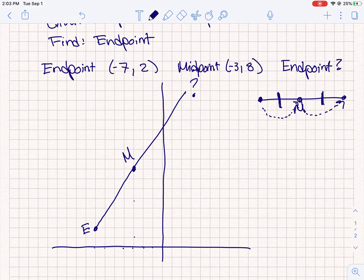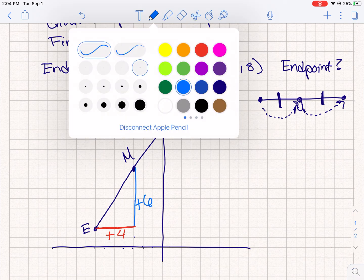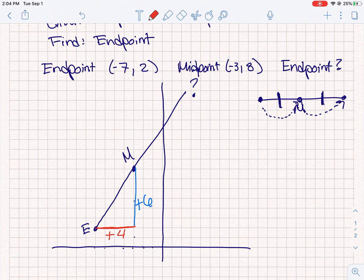So I am going to make those right triangles to help us with that. If we are looking horizontal, remember our x's are horizontal, I add 4 to go from, remember we always travel left to right, so I add 4 and then I go up 6. So since the midpoint is in the middle, I have to keep that same pattern to get to this other endpoint here. So I am going to add 4, and then I am going to go up 6.